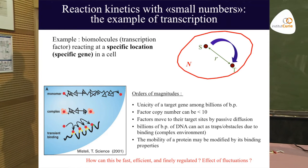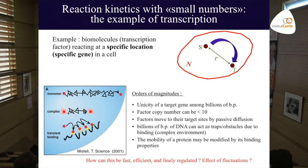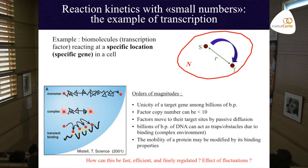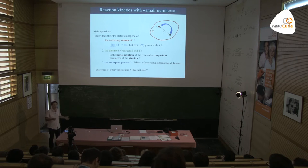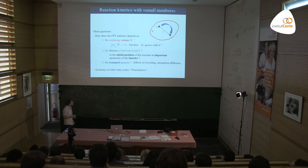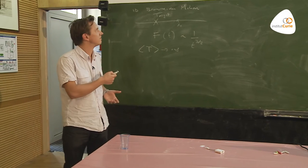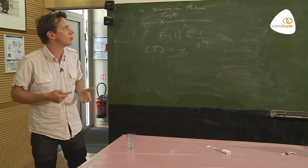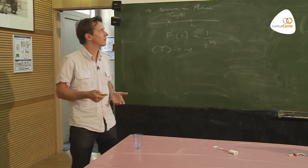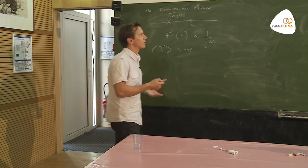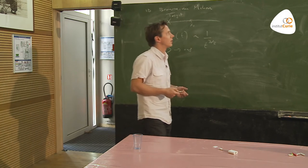We want to assess how much the complexity of the environment — crowding, potential binding to DNA — affects the search process and changes kinetics. This process should be fast, since transcription reactions are extremely important for the cell to function. It should be efficient and regulated by different chemical processes. Concretely as physicists: how can I compute a mean first passage time to a target in a confined volume, and how does it depend on geometry and transport type?